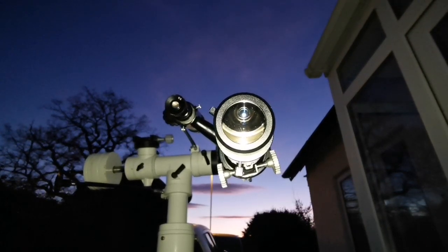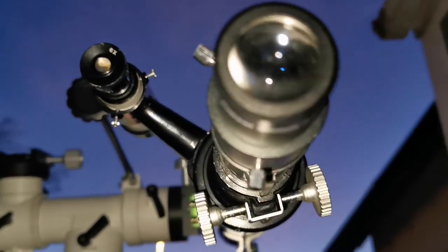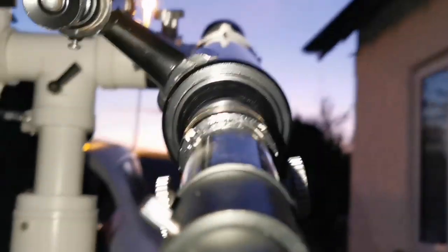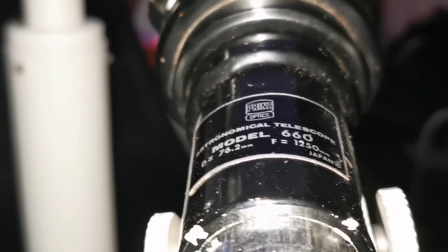So now I'm using a Prince Optic 76.2mm telescope. It has a focal length of 1250, it's a very long telescope. As you can see here, it gives you an F number around F16.4 I think. Let's see how is the view.